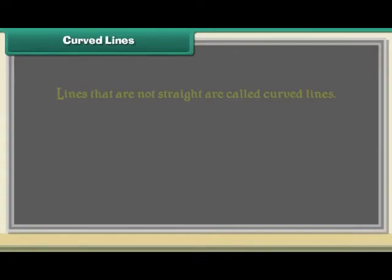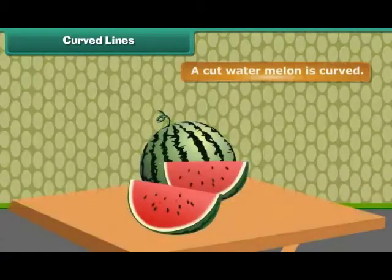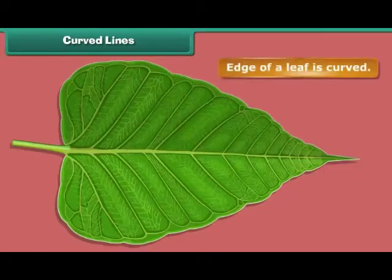Curved lines. Lines that are not straight are called curved lines. A cut watermelon is curved. The edge of a leaf is curved.